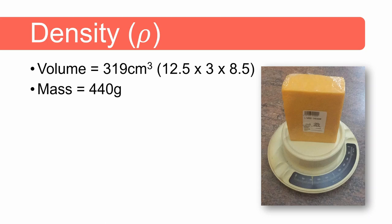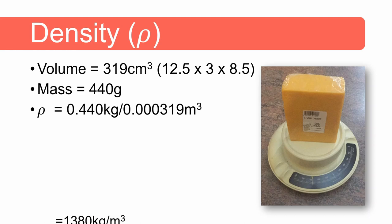The mass of the cheese is 440 grams or 0.44 kilograms. The density of the cheese can be calculated from mass divided by volume and we get a value of 1380 kilograms per cubic meter.